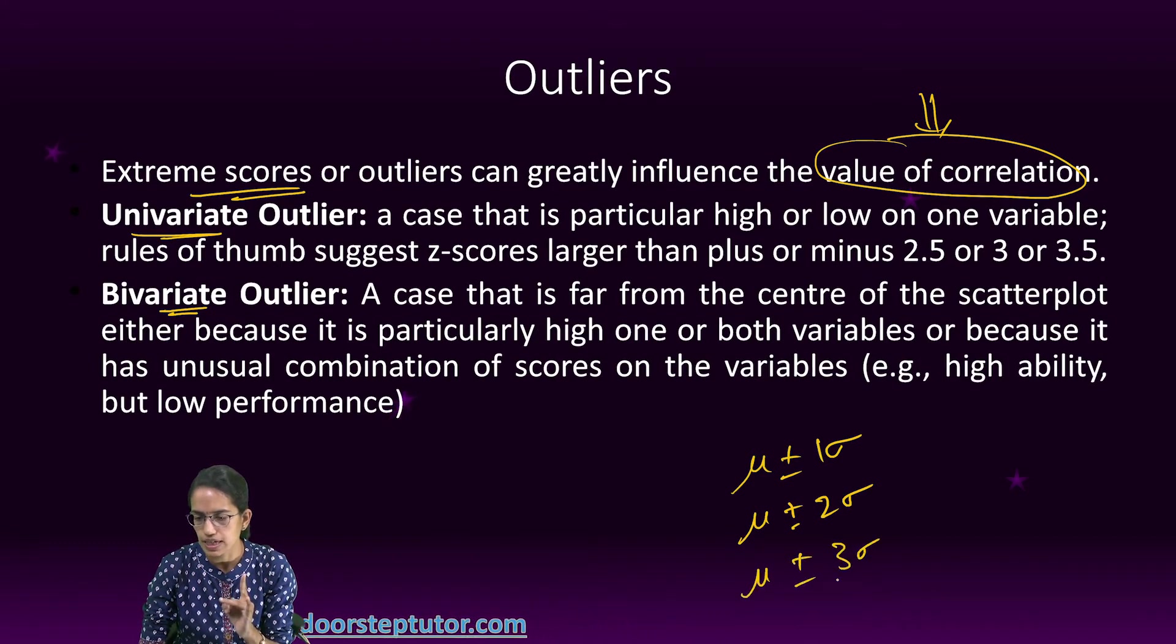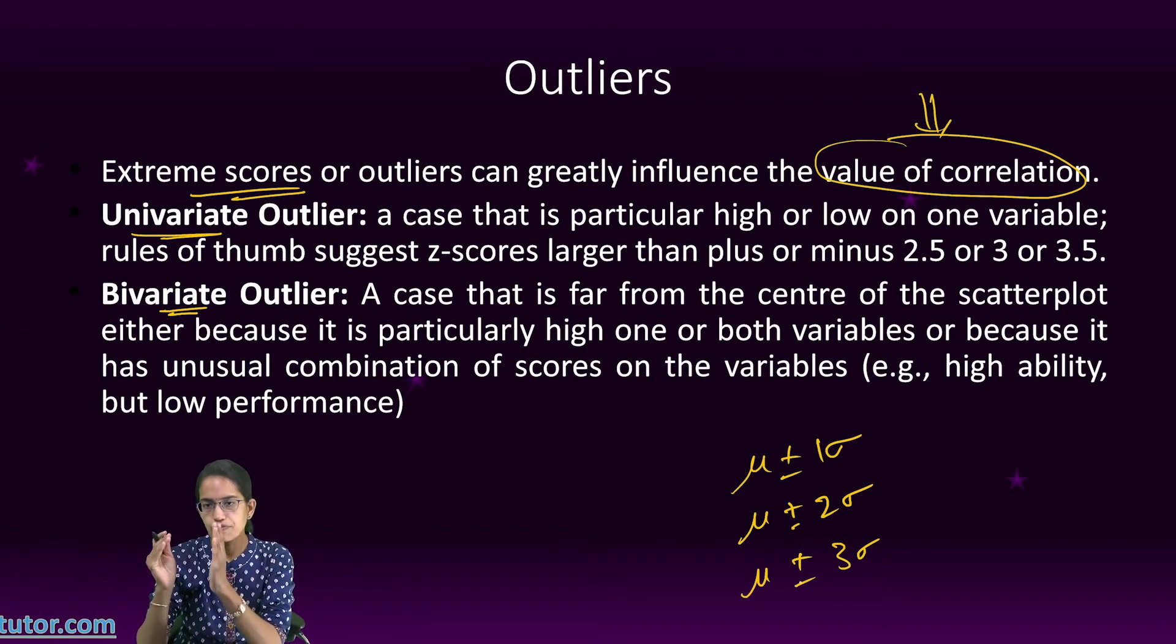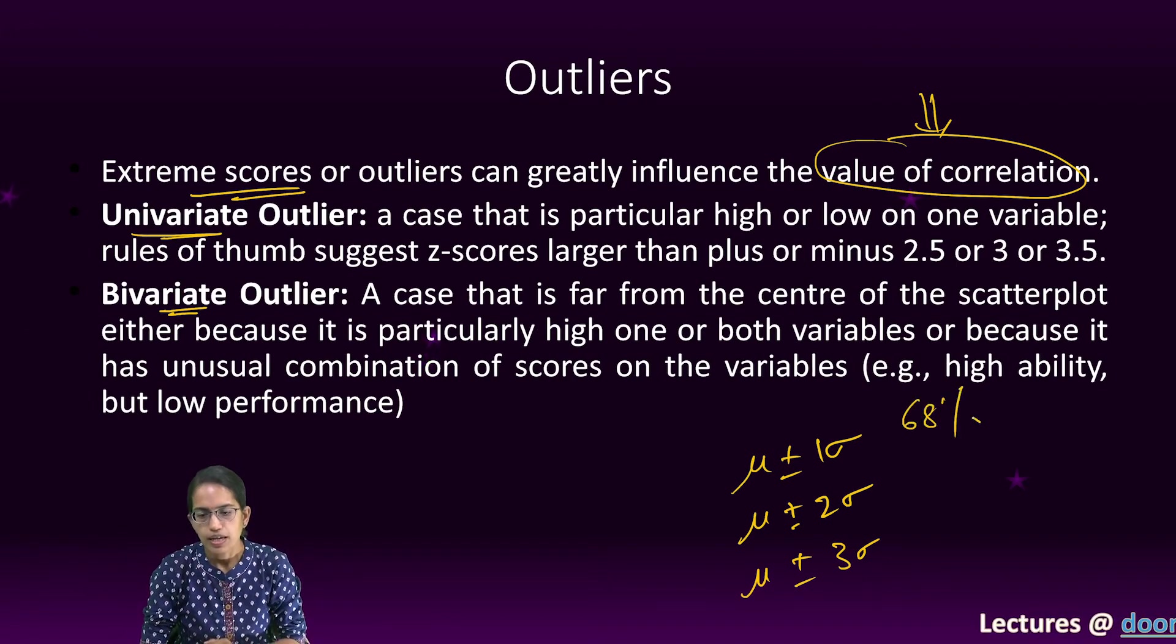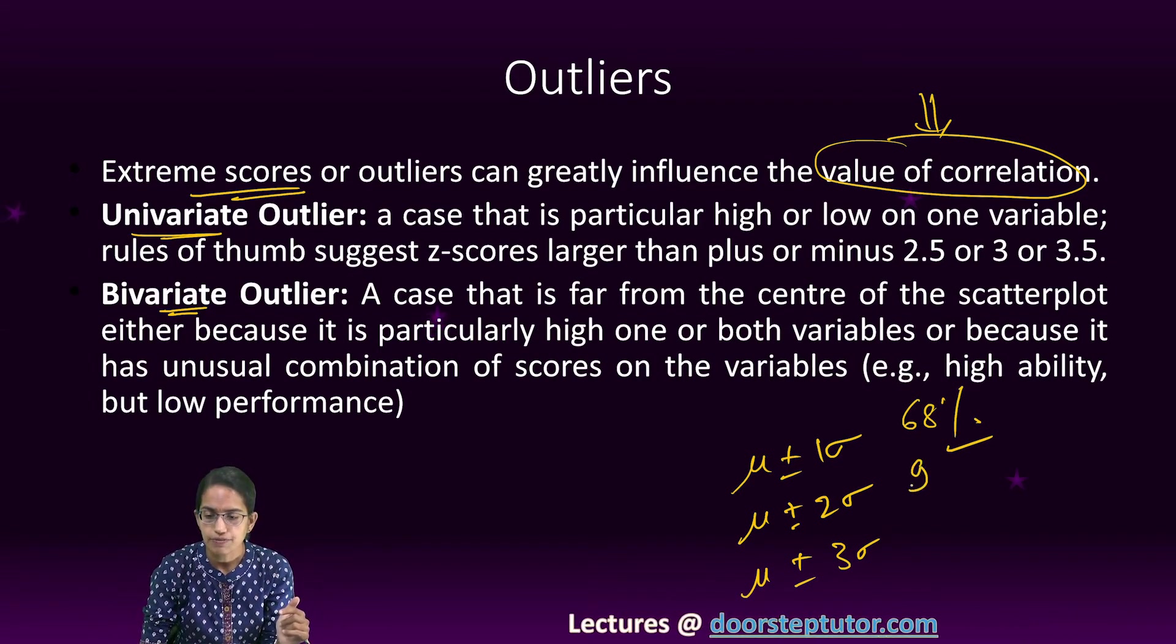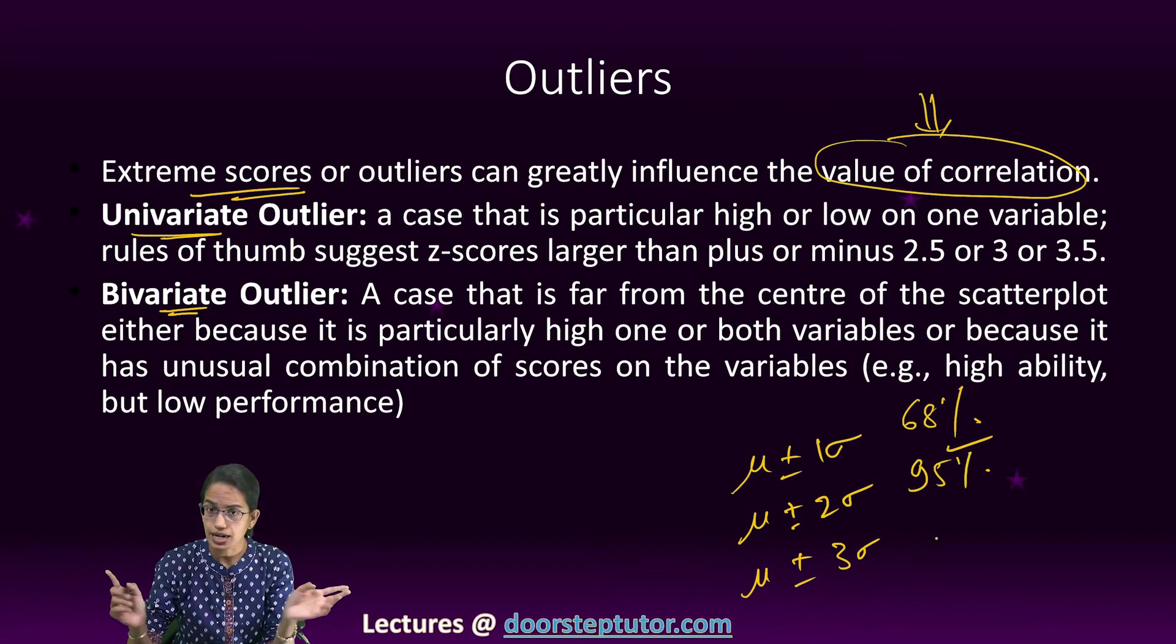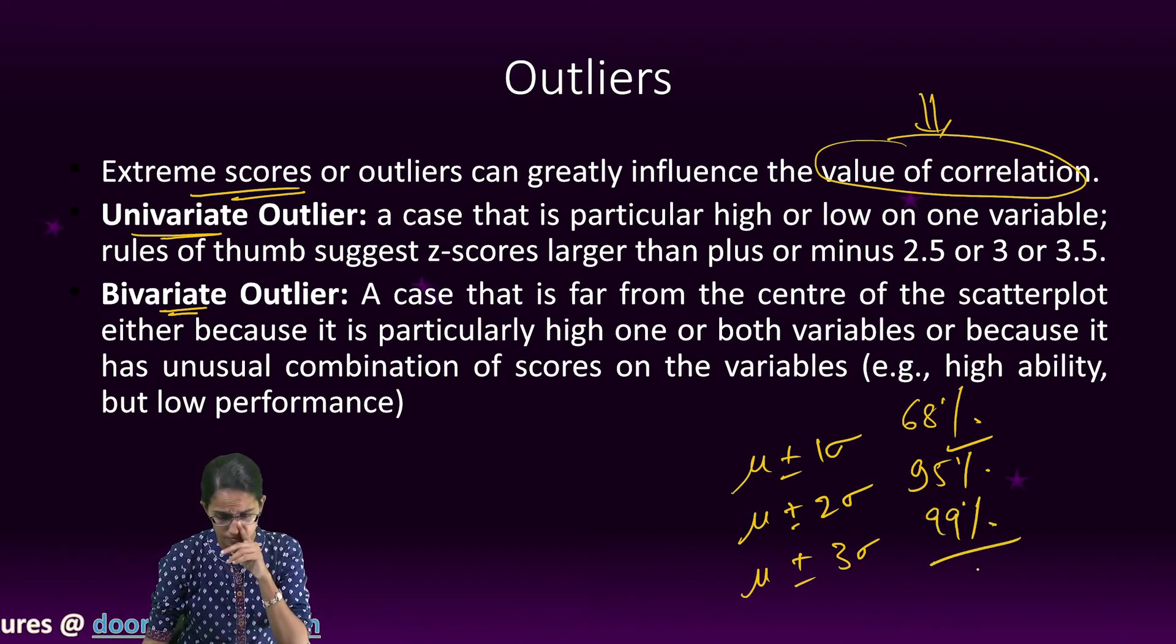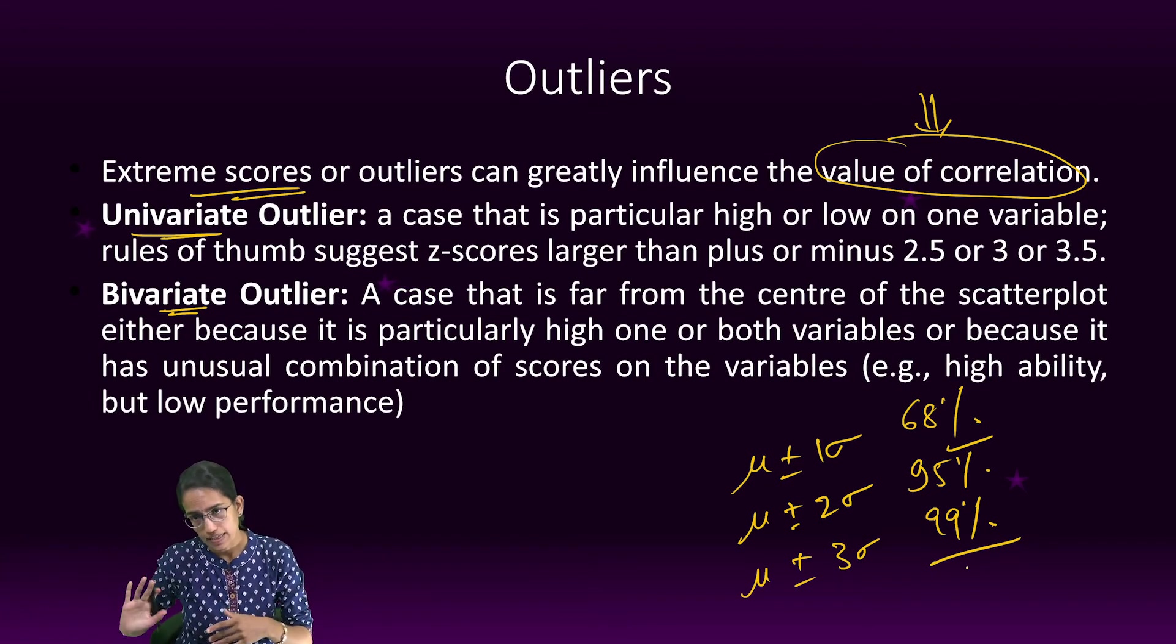On a normal probability curve, if it is the mean in the center, one standard deviation plus or minus is 68%. Two standard deviations plus minus the mean is 95%. Three standard deviations plus minus the mean is 99% coverage. If any value lies beyond that 95 or 99%, we call this an outlier.